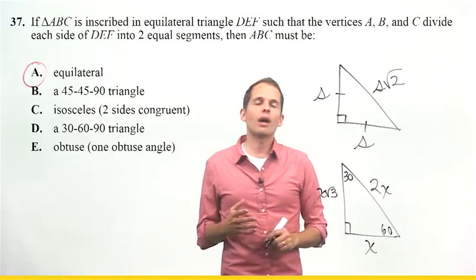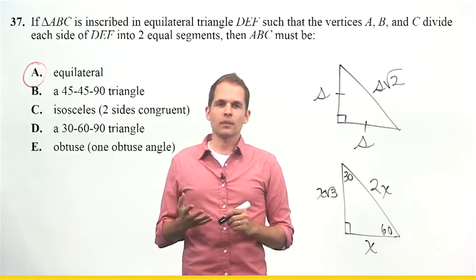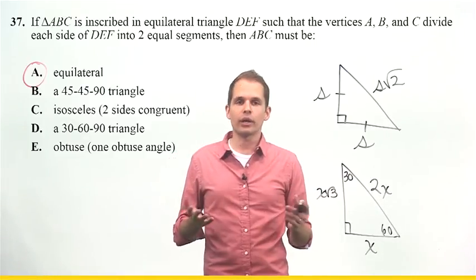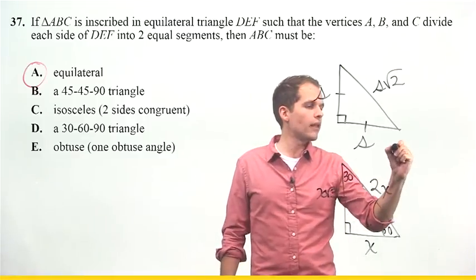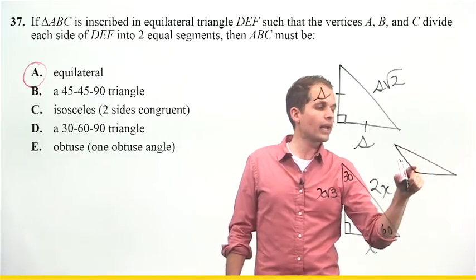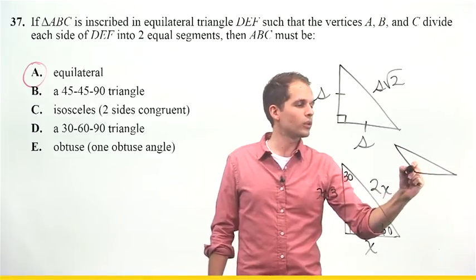Finally, answer choice E describes an obtuse triangle. An obtuse is just any angle greater than 90. So, I would get a triangle that looks like this. One angle greater than 90, and two acute angles.